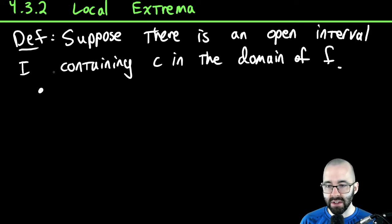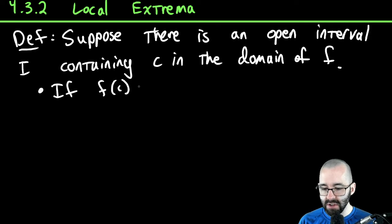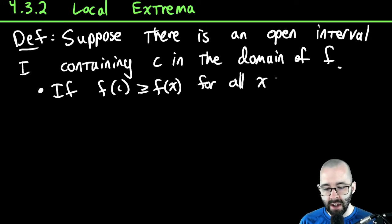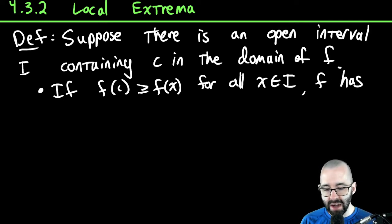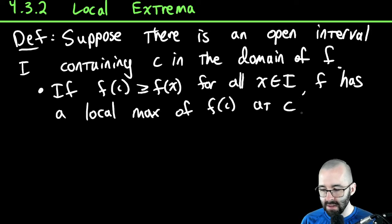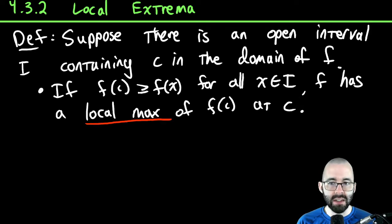A couple things could happen here. If f(c) — the function value at c — is bigger than the function value at any x, for all x in that interval, then f has a local maximum of f(c) at c. That's what a local maximum is.